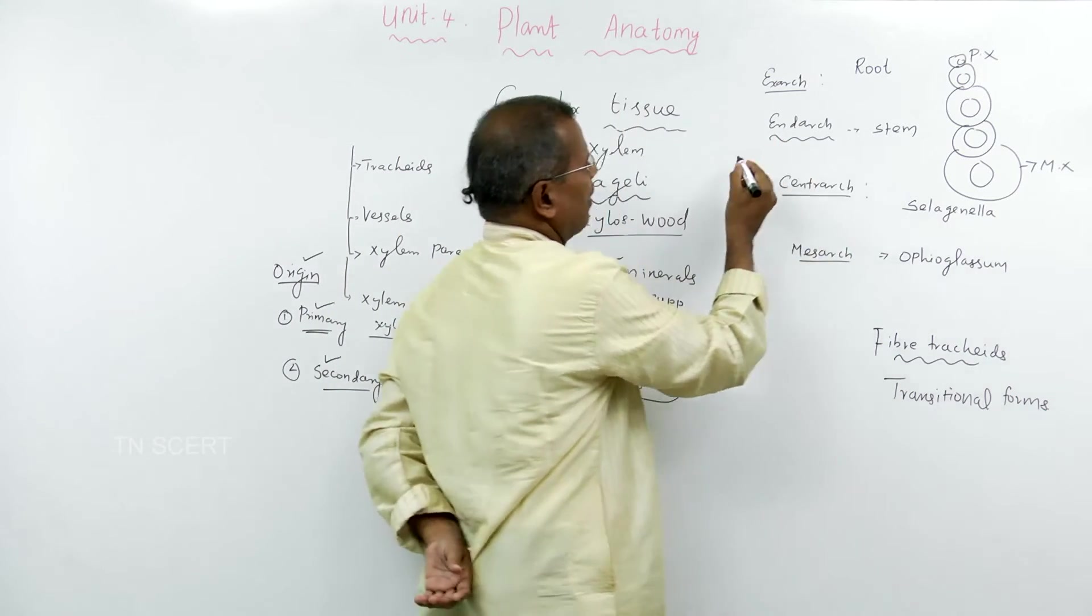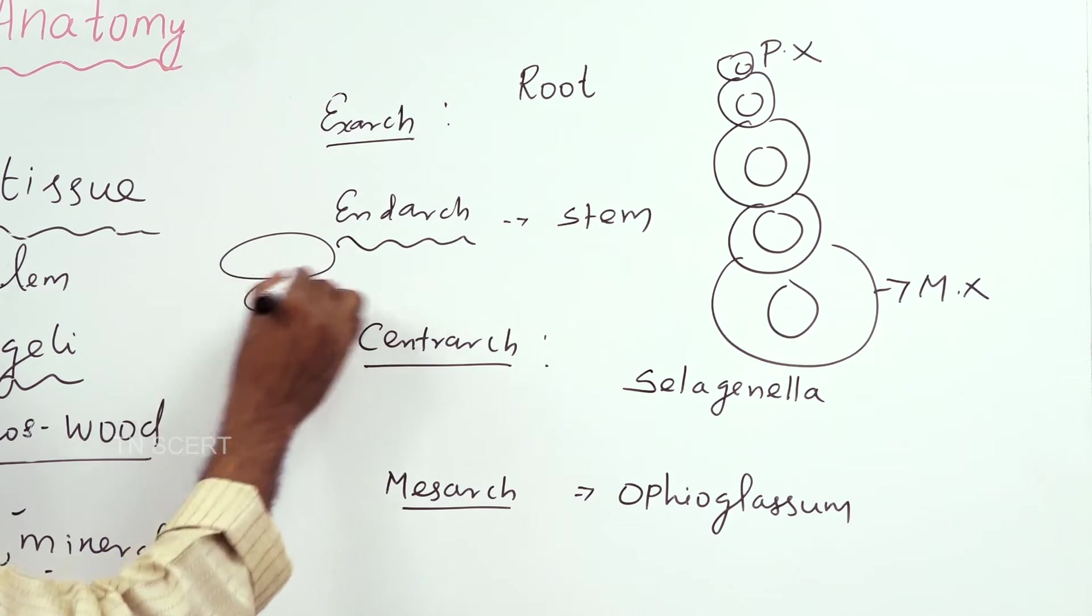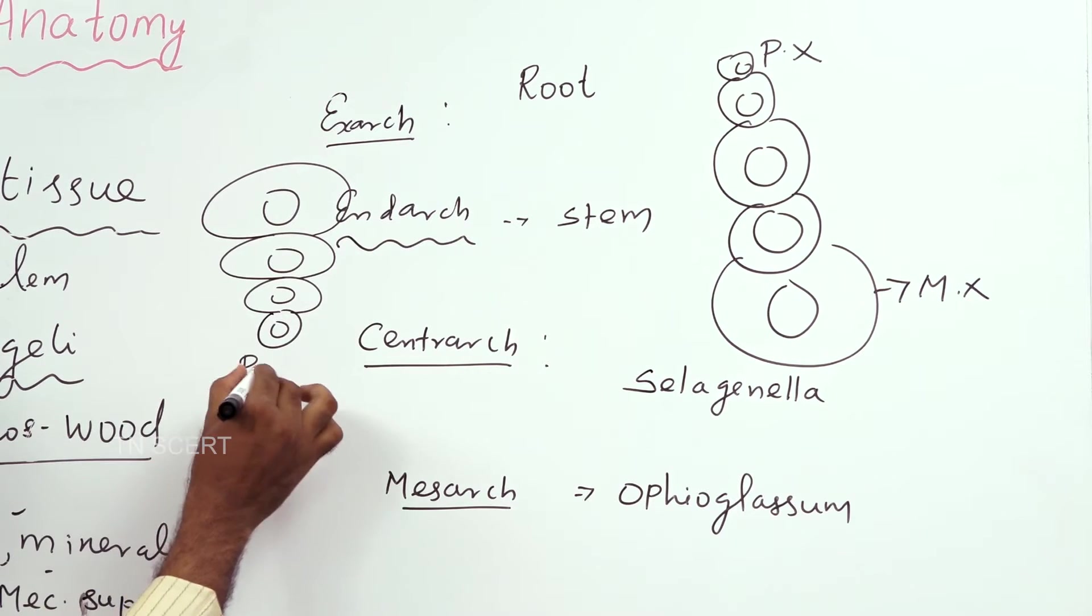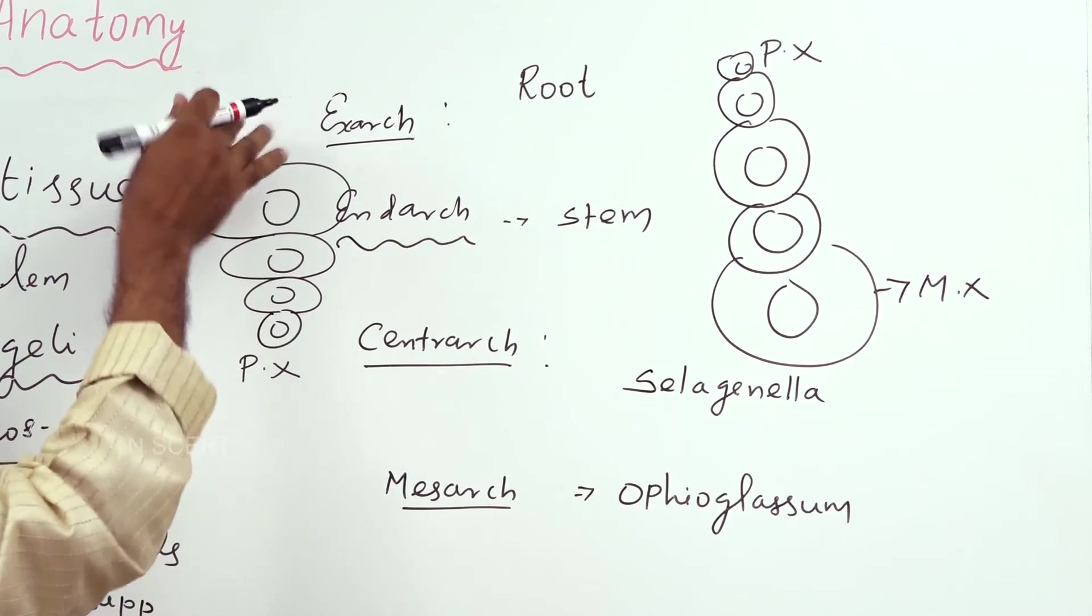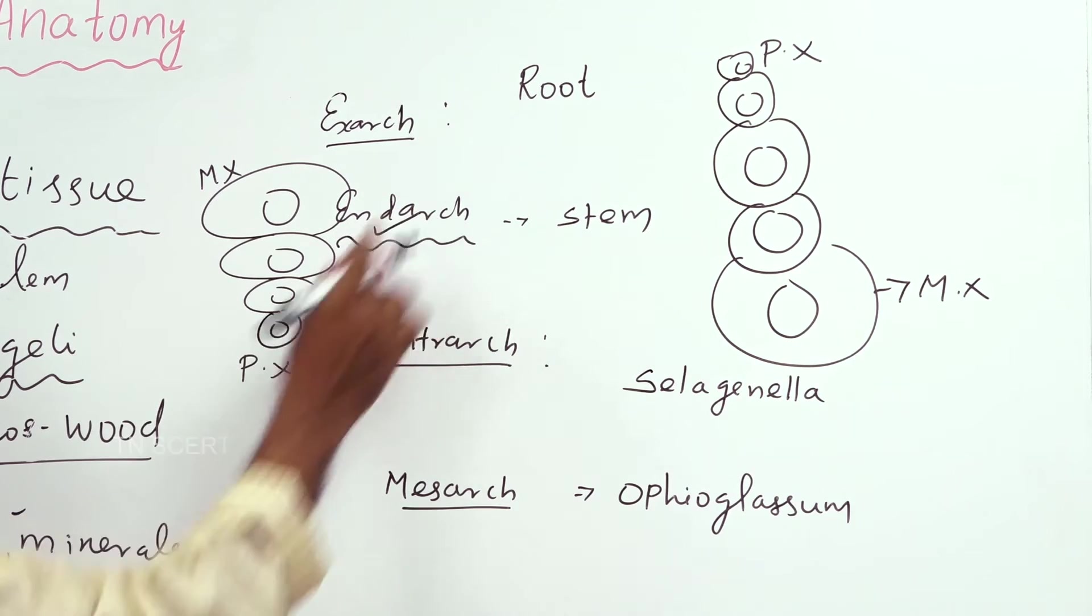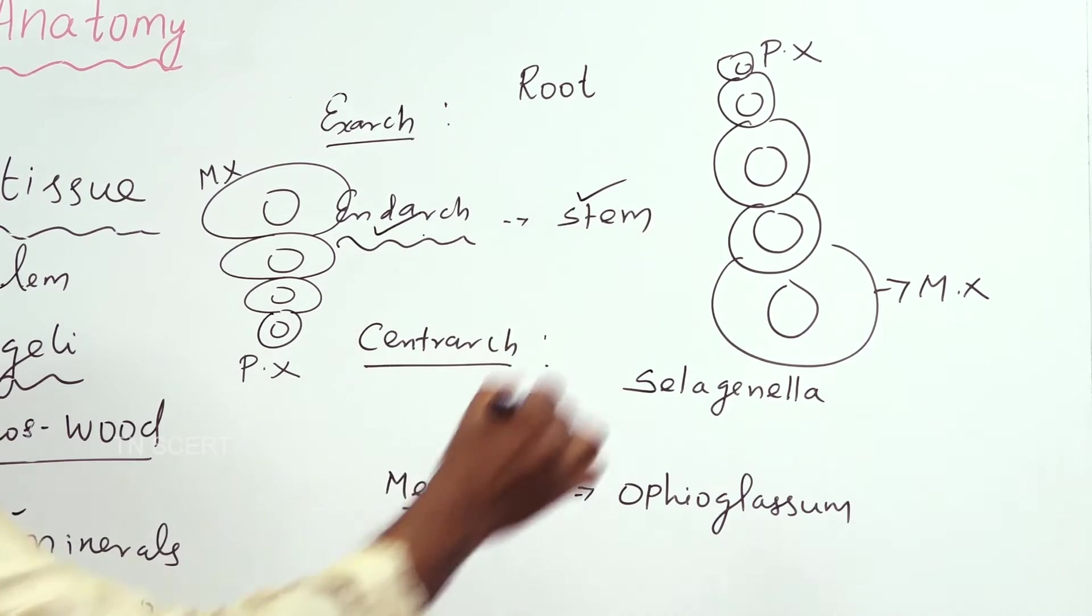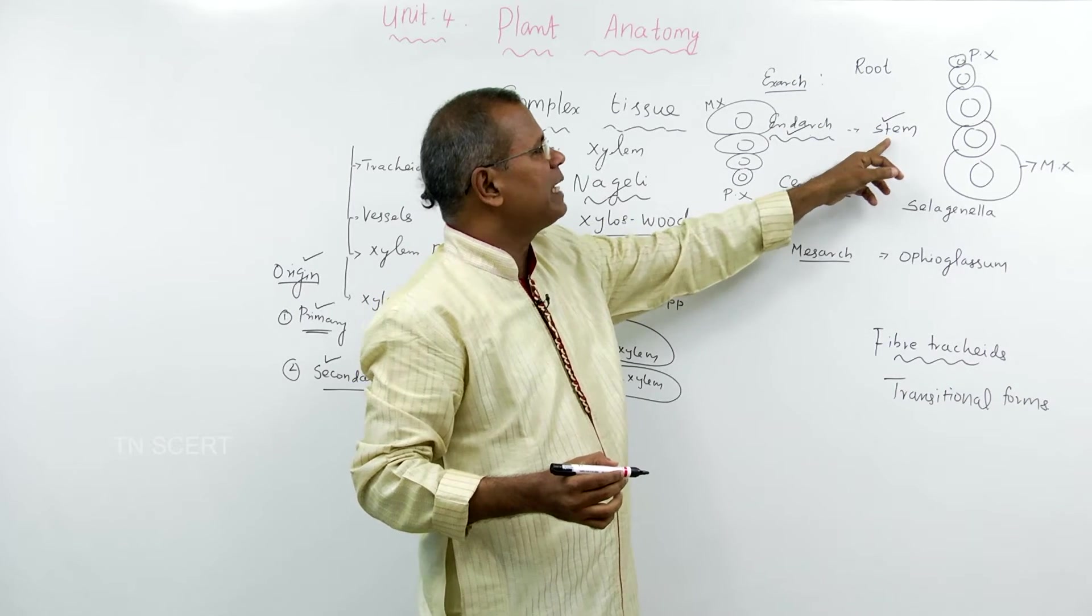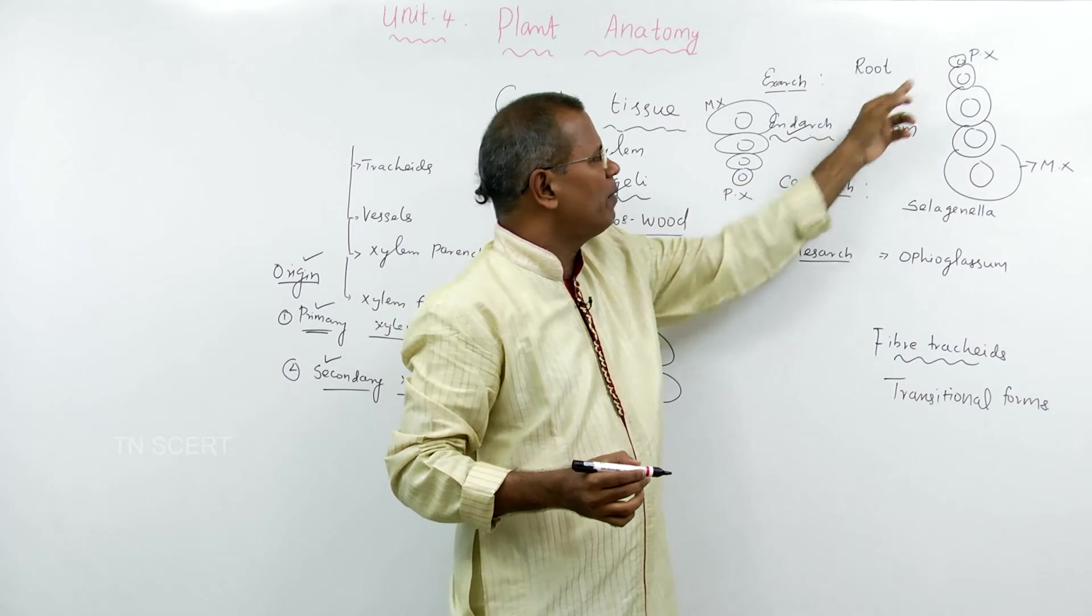If the protoxylem towards the center and metaxylem towards the periphery, protoxylem towards the center, metaxylem towards the periphery. Protoxylem towards the center is exarch xylem. Endarch xylem seen in stem. In root exarch seen, in stem endarch seen. In root exarch xylem seen, in stem endarch xylem seen.